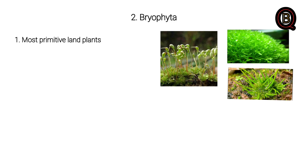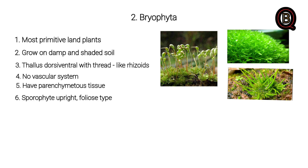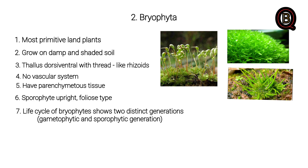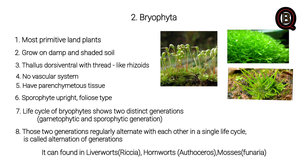Bryophyta: more primitive land plants. Grow on damp and shady places, with dorsiventral structure, rhizoids. No vascular system. Heterogeneous tissues. Separate male and female types. Life cycle of Bryophyta shows alternation of generations — gametophyte and sporophyte are separated generations. Two generations alternating with each other in a single life cycle is called alternation of generations. Examples include liverworts, mosses, and hornworts.